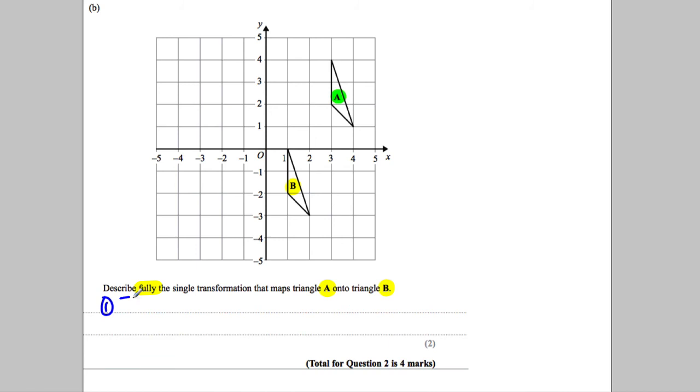So you get one mark for stating it's a translation. Remember, a translation means a movement. Now, you've got to give a vector that the translation is by. So by what vector? You can't say two left, three up or whatever. You have to give a vector. So find a corner you like, any corner, and work out how that corner gets to this corner, the similar corner.